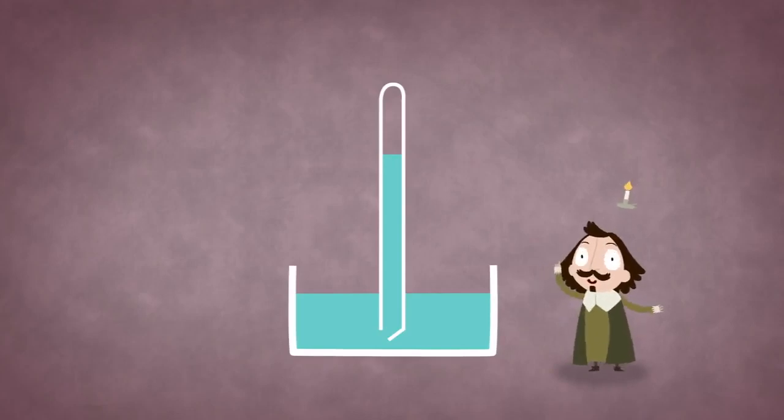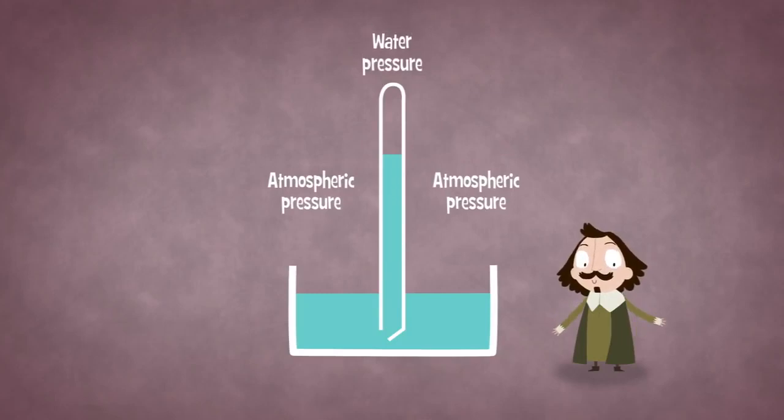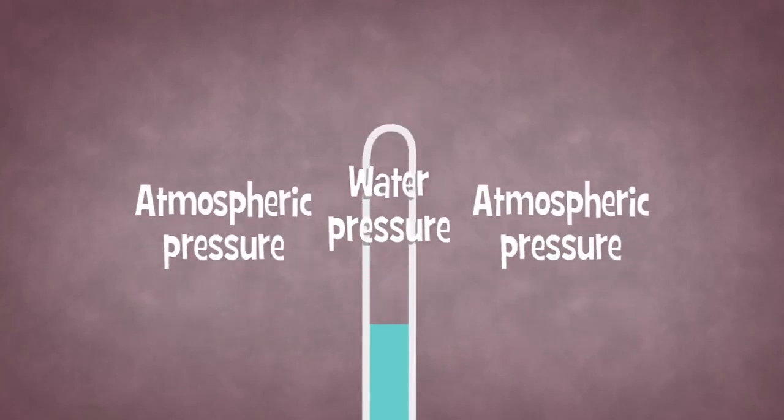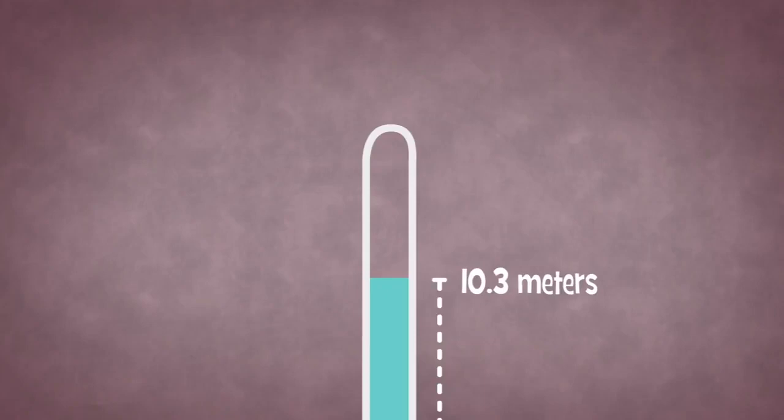He realized that the experiment was not only a tool to create a vacuum, but operated as a balance between the atmospheric pressure on the water outside the tube and the pressure from the water column inside the tube. The water level in the tube decreases until the two pressures are equal, which just happens to be when the water is at 10.3 meters.